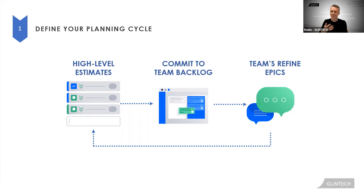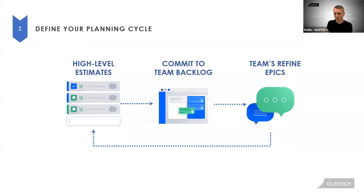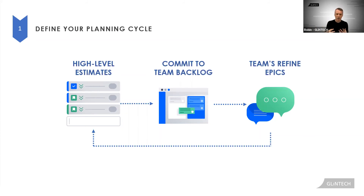Anyway, when the team gets that epic, they can then start to flesh it out. They'll then put stories and the tasks that are required to deliver it. They'll estimate them as well. And these more accurate estimates will flow back up. It's that dotted line back that's often missing, and replace that initial high level estimate of 200 points with the more accurate estimate of maybe 250 points. And now — and this is the magic bit — we can re-plan based on that more accurate information.